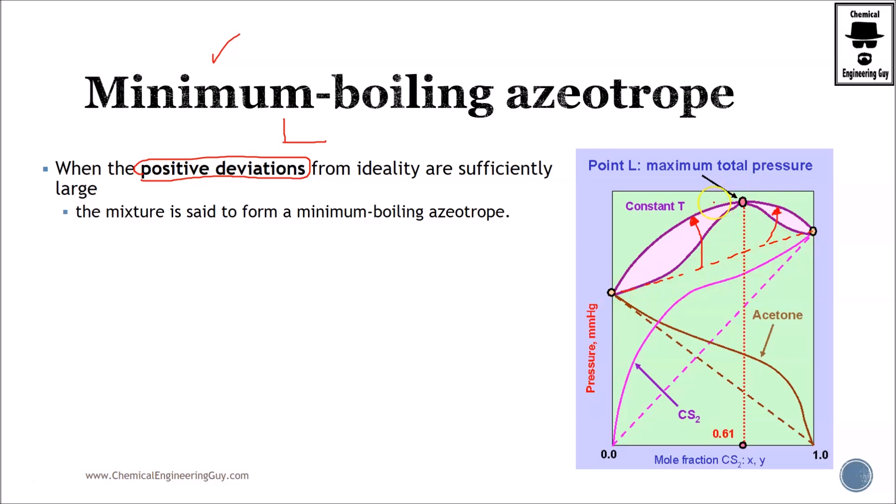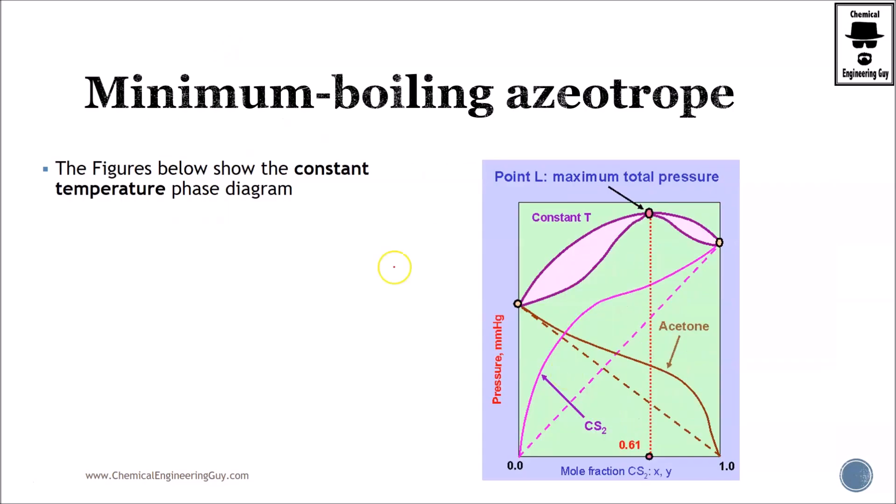As you can see, we have no problems. You're probably wondering why we call this a minimum-boiling azeotrope point if we have a maximum point right here. Well, this is true for pressure, but this is constant temperature, meaning that we are changing pressure.